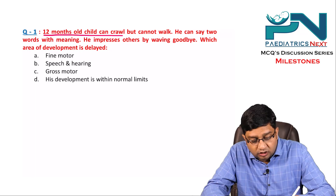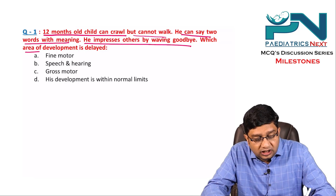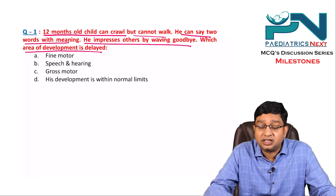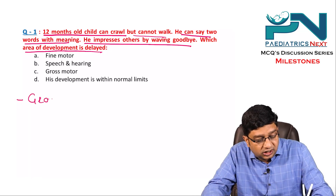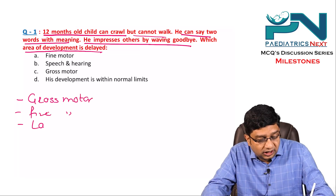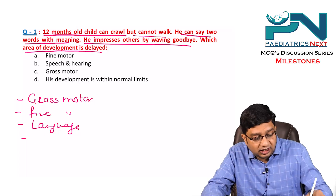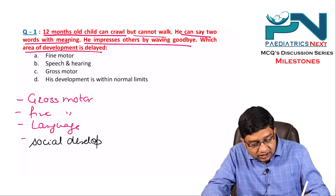A 12-month-old child can crawl but cannot walk. He can say two words with meaning and impresses others by waving goodbye. Which area of development is delayed? You need to understand that the four areas of development they can ask about are: gross motor, fine motor, language, and social development and general understanding.